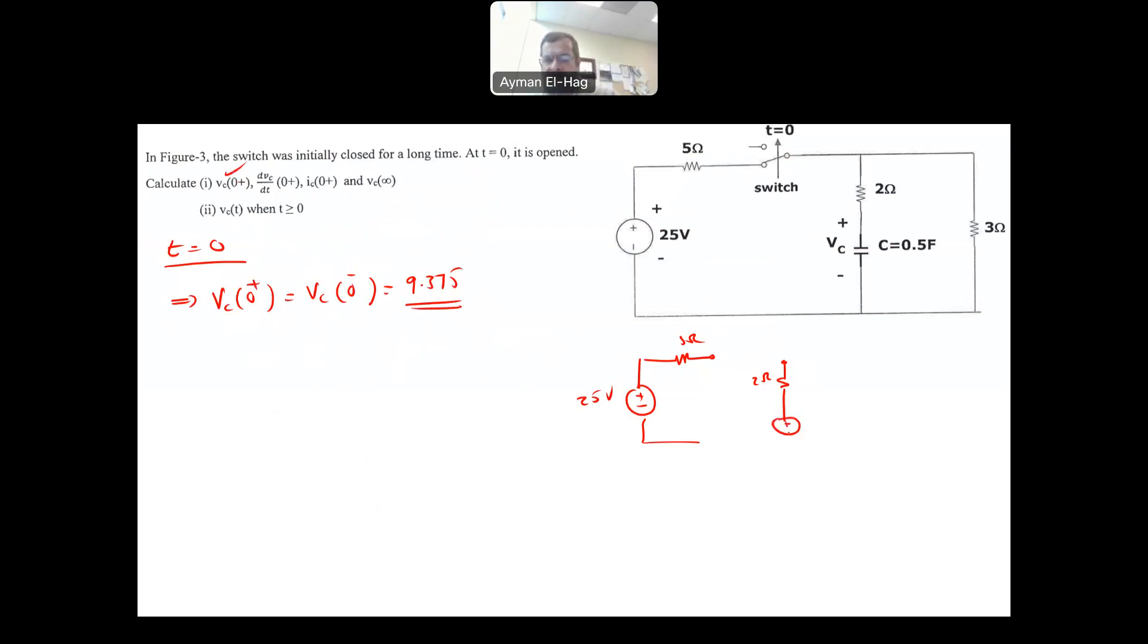So here will be like a voltage source equal to 9.375. And then we will have here the 3 ohm. Now this circuit is floating. It doesn't really do anything. You can just take it out. So let me find my IC here. Your IC at this moment is basically equal to the voltage 9.375 divided by the total resistance, 2 plus 3 ohm, which give me 1.875 amp. So this is the third requirement.